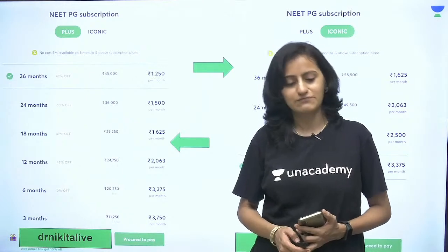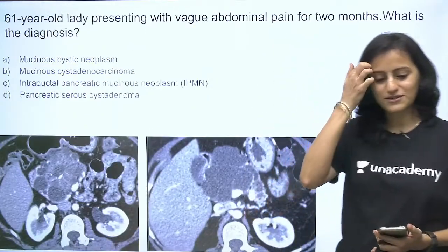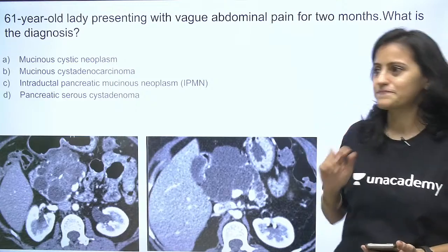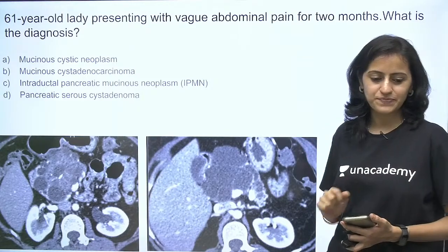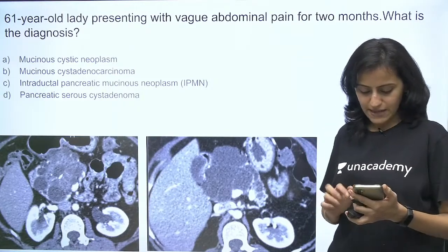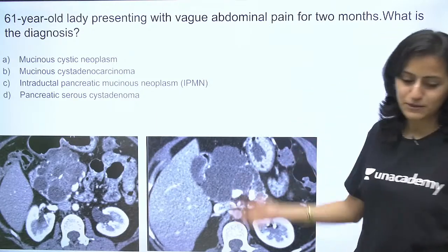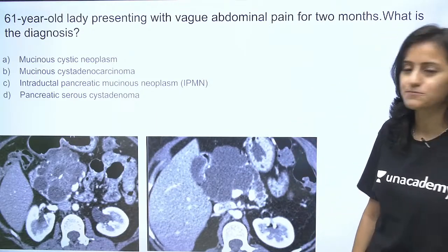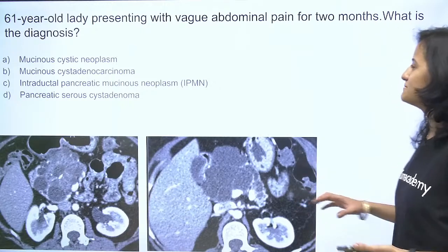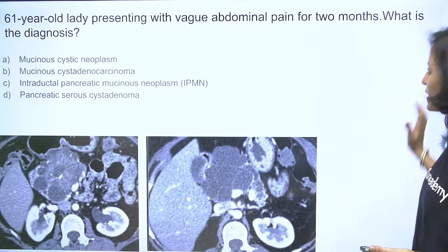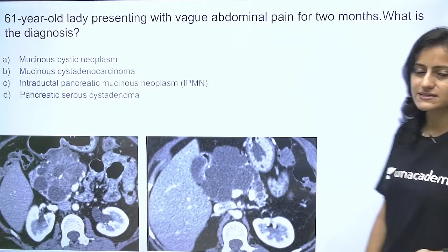Now let us start with the first question. Some questions will have multiple options and some will be spotters. A 61-year-old lady presenting with vague abdominal pain for two months — what is the diagnosis?